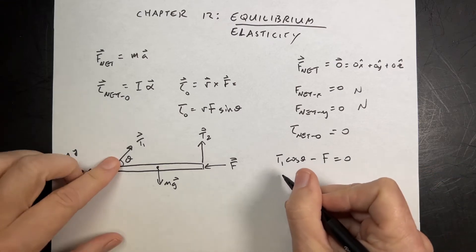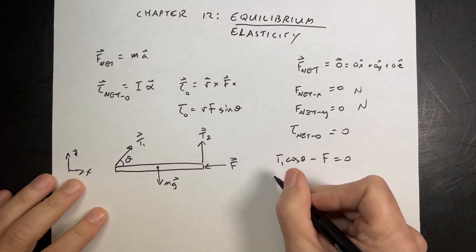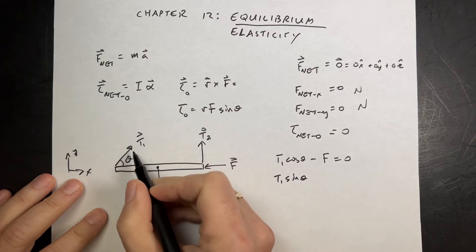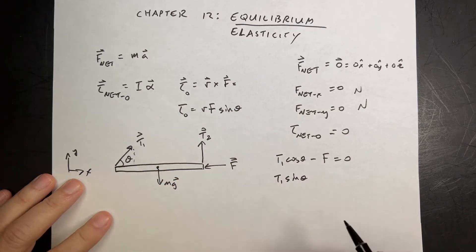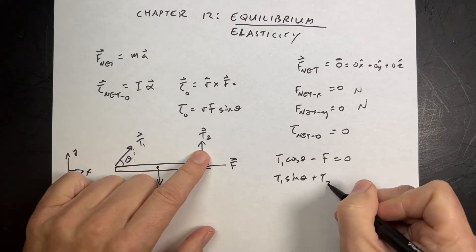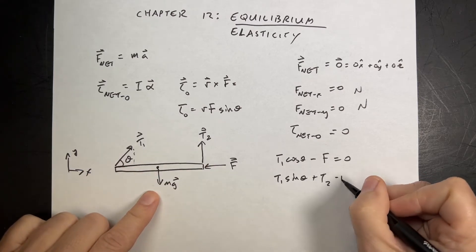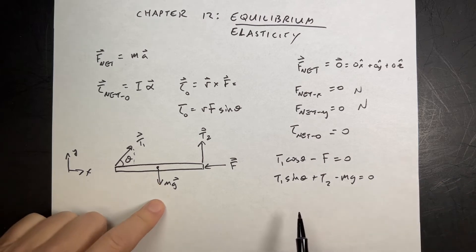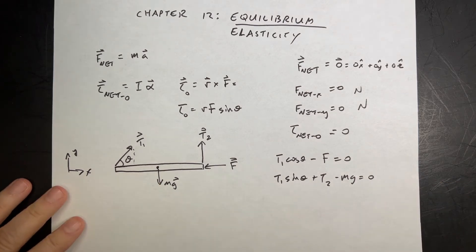The y equation would be the y component of this, t1 sine theta. And it's just sine because of the way that angle is depicted. In the positive x direction, plus t2, it's all in the y direction, minus mg equals zero, because that's in the negative y direction. That has no y component.